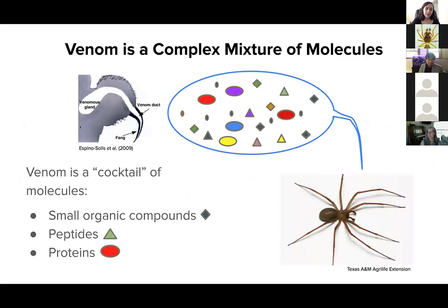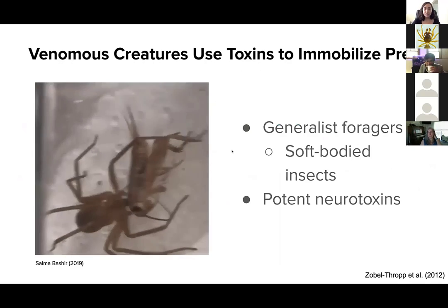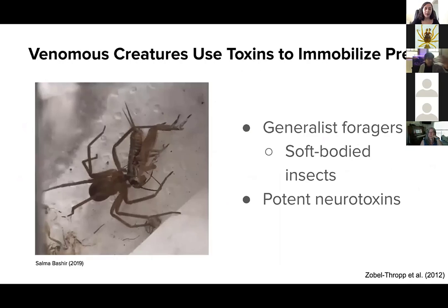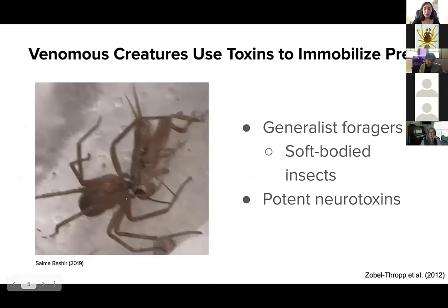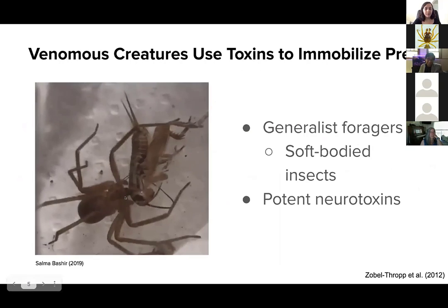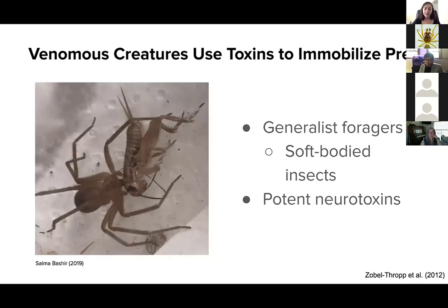The biodiversity of spiders, in particular, is expanded by the diversity of molecules within their venom. This is a venom gland, as well as a cartoon representation. We use the analogy that venom is a cocktail of different molecules, including small organic compounds, peptides, and proteins. Venomous creatures, of course, use their toxins primarily to immobilize their prey. This here is a brown recluse feeding on a cricket that's almost larger than itself, and these spiders are generalist foragers, feeding primarily on soft-bodied insects.